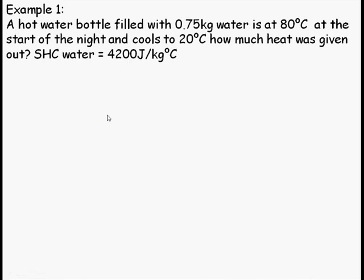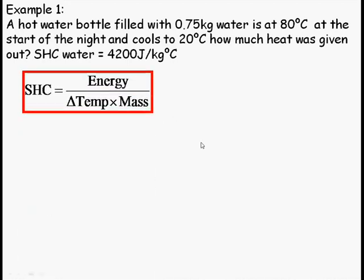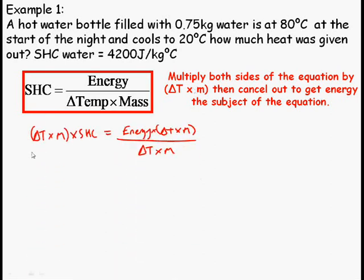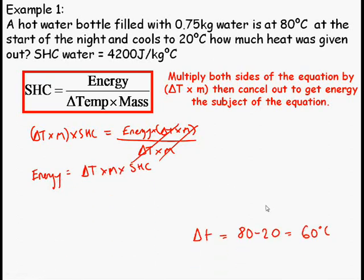Well, the heat energy given to something to raise its temperature is going to be exactly the same as the heat energy given out by that object as it reduces its temperature. Conservation of energy. So, write down the formula. Well, this is the formula I had to start with. So, I'm going to need to rearrange this so that I get energy as the subject of the formula. Multiplying both sides by delta T times M. Delta T times M. And then I can cancel out here. Gives me energy is equal to delta T times M times specific capacity.